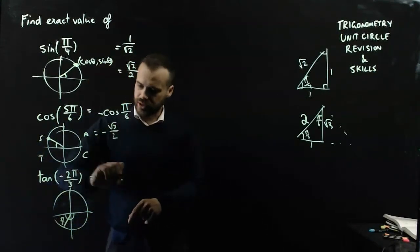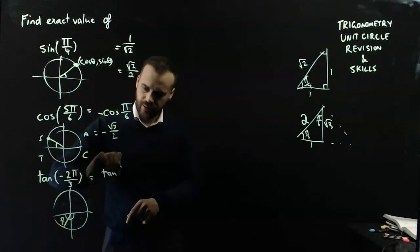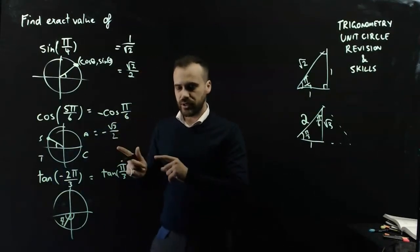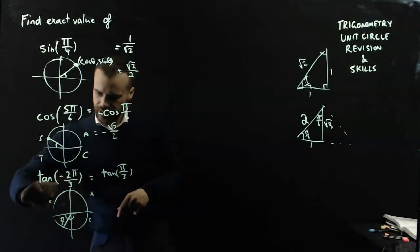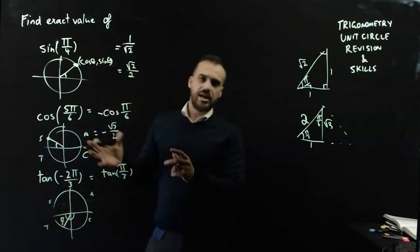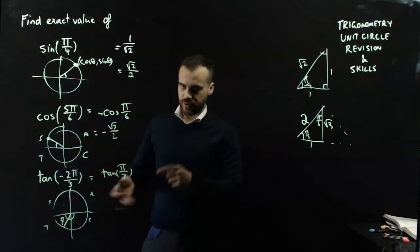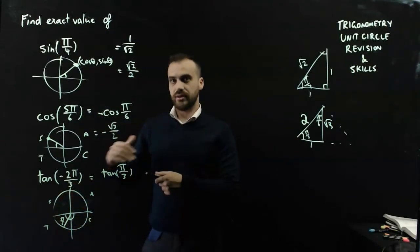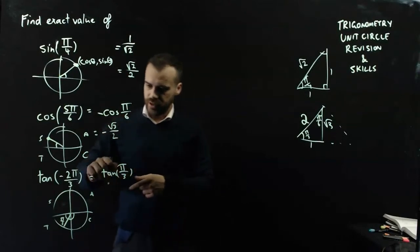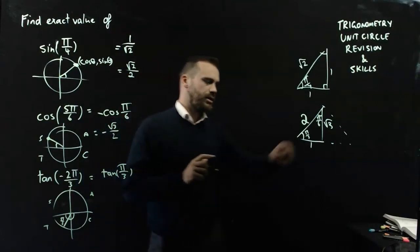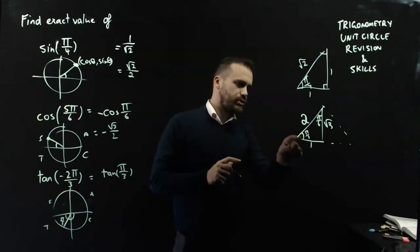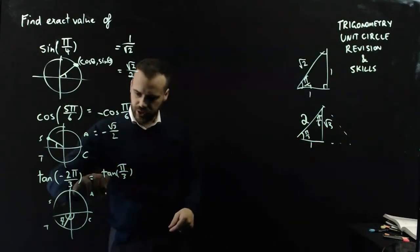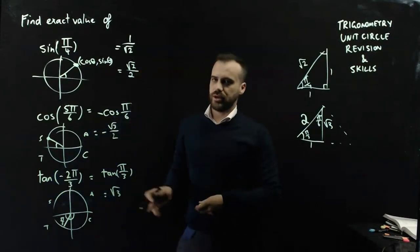So, it's going to be tan π on 3, but is it positive or negative? C-A-S-T, it's the tangent quadrant, it's positive. The reason for that, negative cosine, negative sine, divide one by the other to get tan, that's going to be positive. So, it's going to be positive tan π on 3, tan π on 3 is equal to opposite over adjacent, root 3 on 1, which is just root 3.